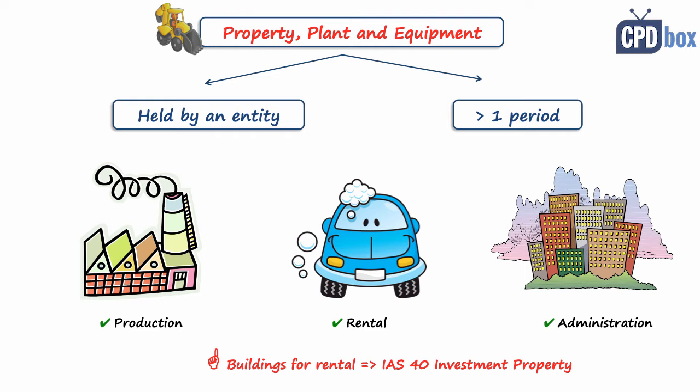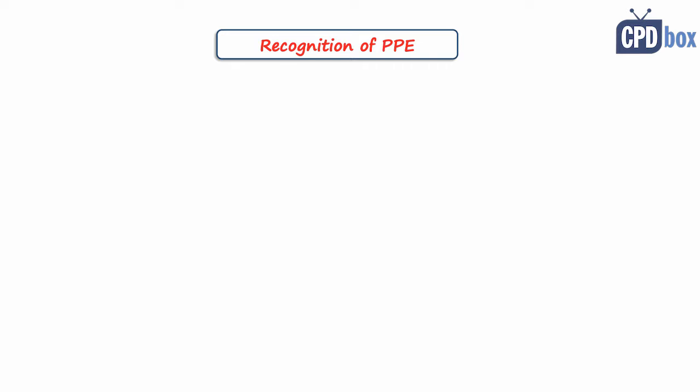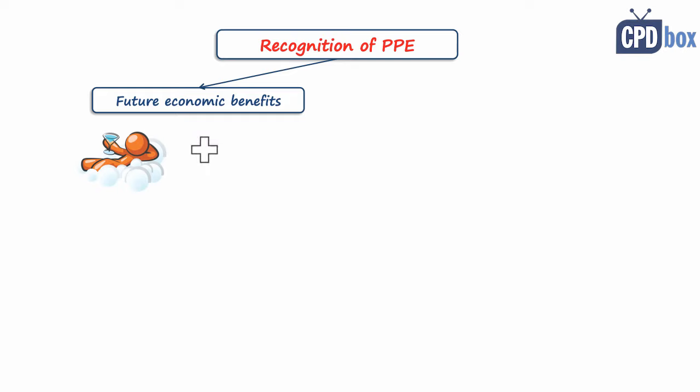In order to recognize property, plant and equipment as an asset, both of the following must be fulfilled. First, it must be probable that the future economic benefits associated with the asset will flow to the entity. It means that the enterprise will receive rewards from the usage of an asset and will carry risks associated with the asset, for example repairs. Here I'd like to address a very common issue of control. An asset is a resource controlled by the entity, so if you do not control it, you cannot recognize it.